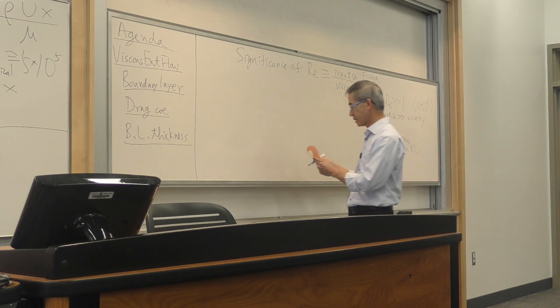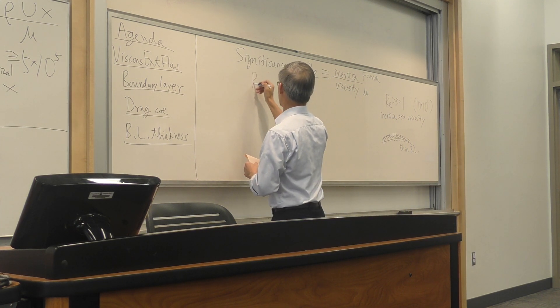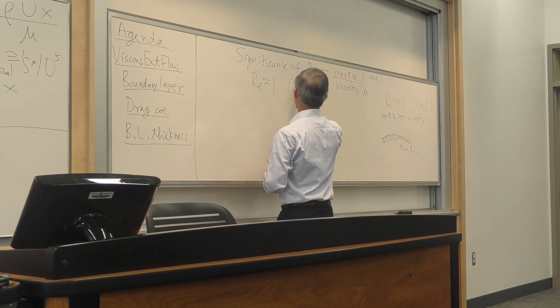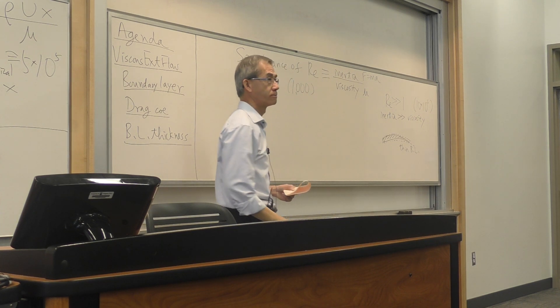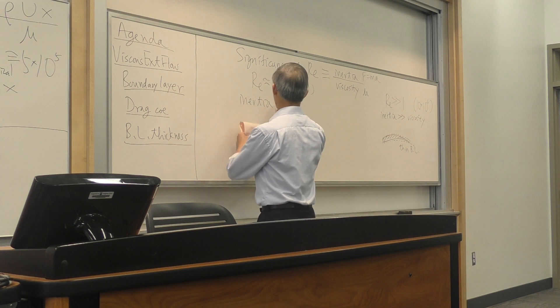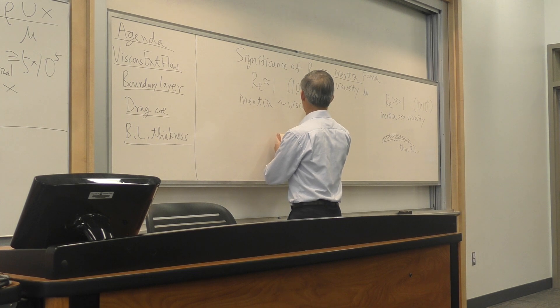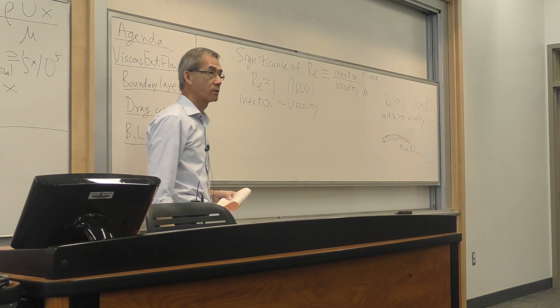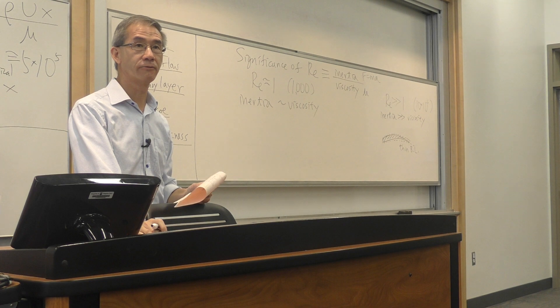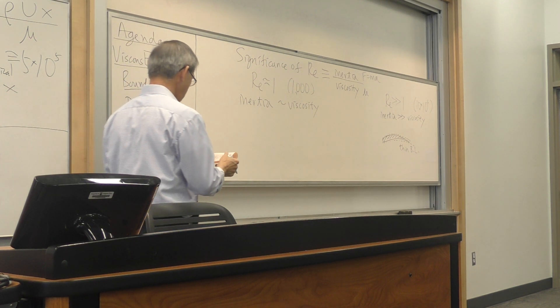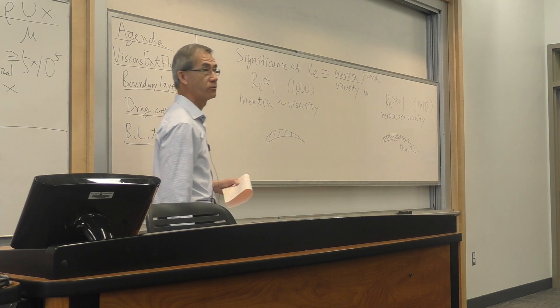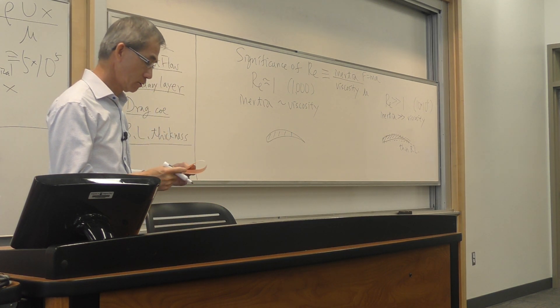The other extreme of this example, where the Reynolds number is not large, it's actually near one, or even a thousand, which is still small compared to 10 million. That is very interesting, because now I have a case where the inertia effect is almost the same order as the viscous effect. So, my concept of the boundary layer is a little bit shaky. What that means, based on this comparison, the viscous effect is equally important compared to the inertial effect.